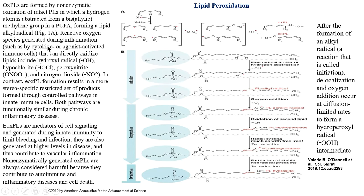Reactive oxygen species generated during inflammation by cytokine- or agonist-activated immune cells that can directly oxidize lipids include the hydroxyl radical, hypochlorite, peroxynitrite, and nitrogen dioxide. In contrast, enzymatically oxidized phospholipids (EOXPLs) result in a more stereospecific, restricted set of products formed through a controlled enzymatic pathway in innate immune cells like the leukocyte.